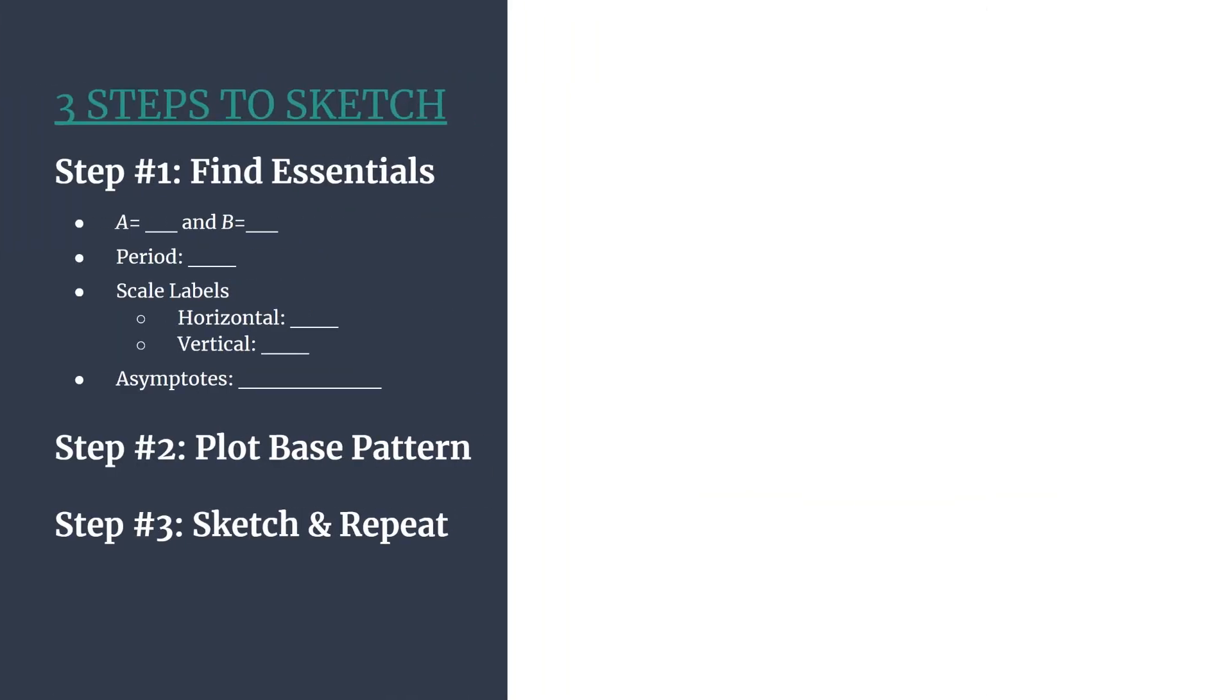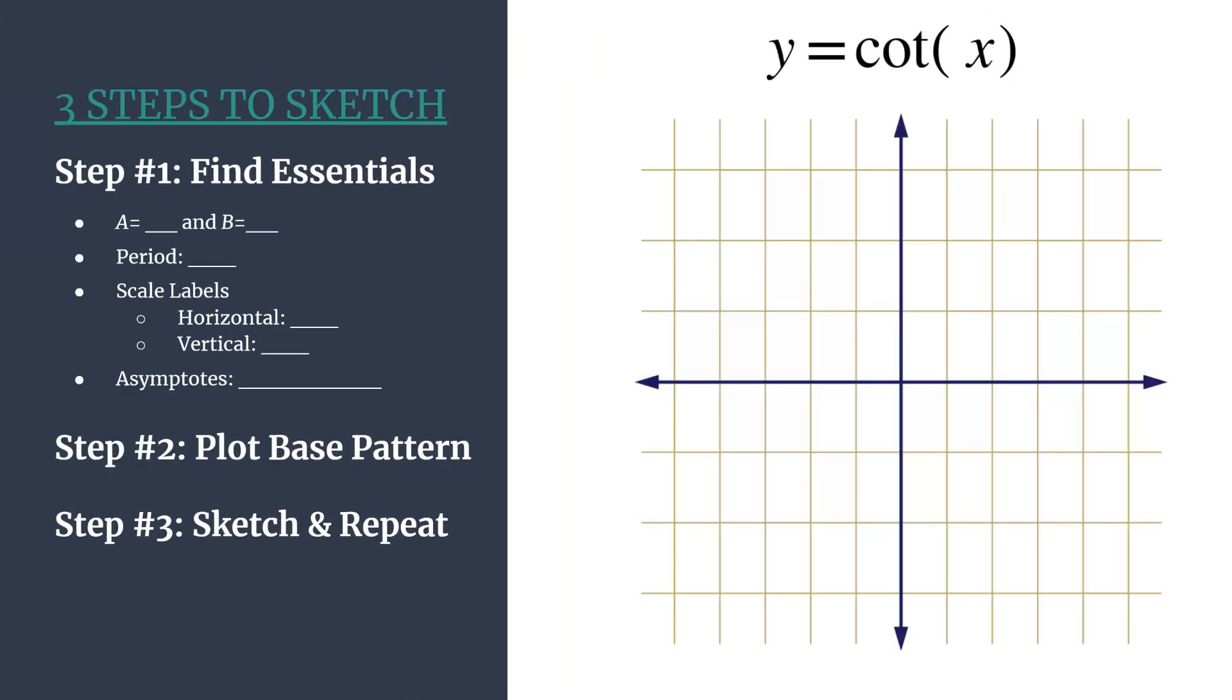So here's our outline and our grid, and it's likely you already know what the graph of y equals cotangent x looks like, but we're going to graph it today using our method so that we better understand the three steps to sketch method and can use it in further examples.